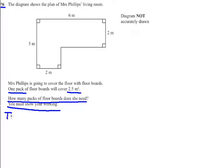So first of all we need to work out the total area of this living room which is made from two rectangles. Now you can split the rectangles vertically or horizontally. I'm going to do it vertically.